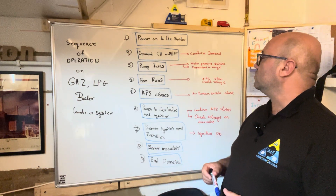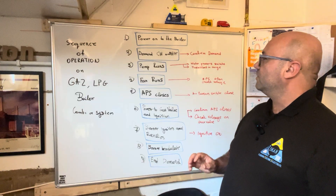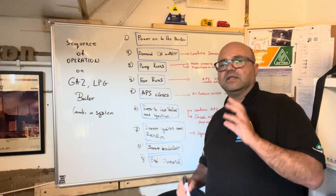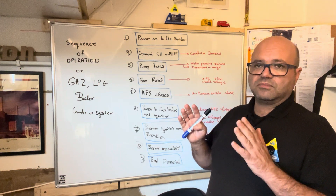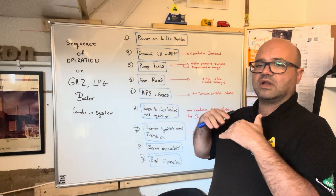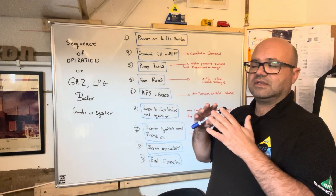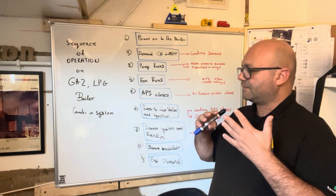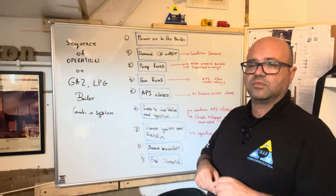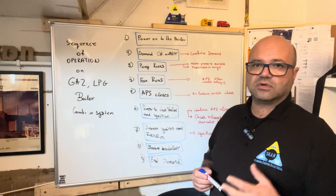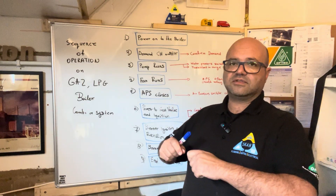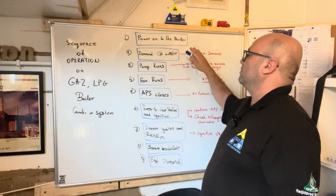Let's dive into the sequence of operation on a gas and LPG boiler. The first thing that happens is making sure we have power on the boiler. To do that we need a multimeter, or simply stand in front of the boiler and see if there's any indication. If the boiler is new it will have an LCD or smart screen showing if it's on or in standby. Older or commercial boilers don't have these, so use a multimeter to check the necessary power.